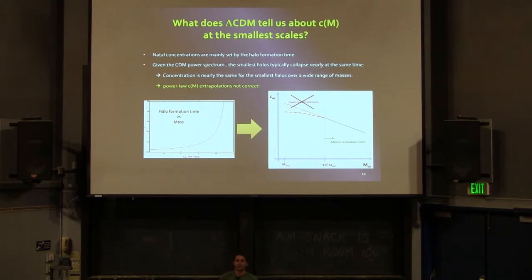What about Lambda CDM? What does it tell you about this? The point probably is a little bit more complicated than this. I was talking with Anatoly about it. But I think this probably summarizes the main point here. As all of you know, natal concentrations are set essentially by the formation time of the halo. Given the power spectrum that you have, given the RMS of this power spectrum, the shape of this RMS and the power spectrum, it turns out that in Lambda CDM the smallest halos collapse nearly more or less at the same time in the universe over a huge range of masses at the smallest scale. This means that since the concentration, natal concentration, is given by the formation time and all of them collapse nearly at the same time, all of them will have nearly more or less the same kind of concentration values. This means a flattening in the concentration-mass relation at the smallest scales. So these power law extrapolations are not in principle expected in Lambda CDM.